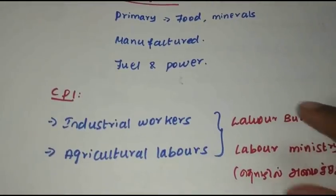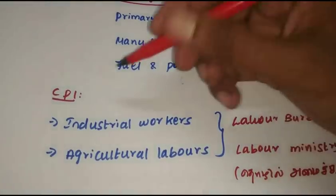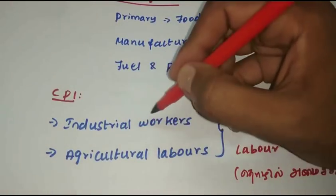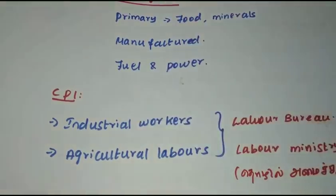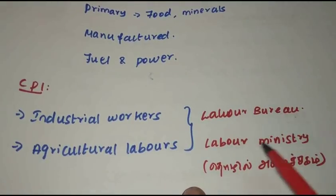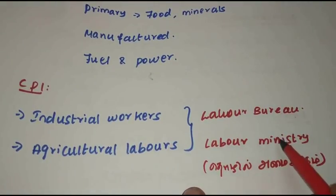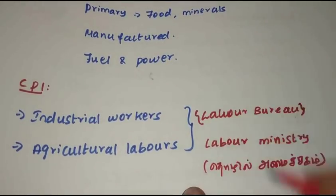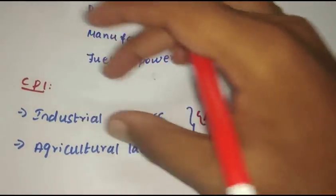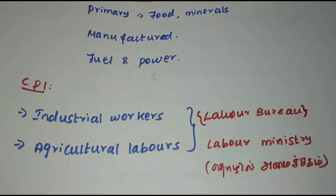For the CPI, there are categories: one is industrial workers and the other is agricultural labor. Who releases these two? The Labor Bureau and Labor Ministry. The Office of Economic Advisor also releases data. This is the Labor Bureau's responsibility.